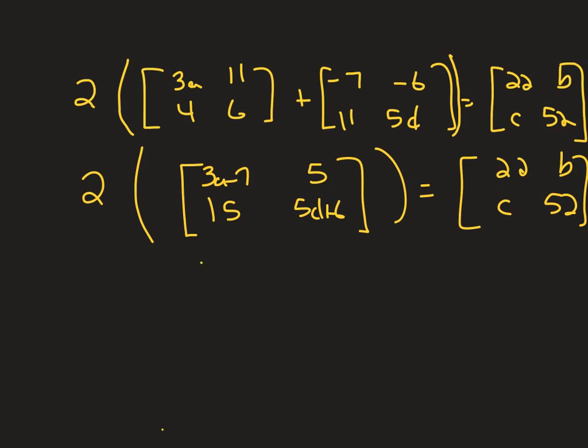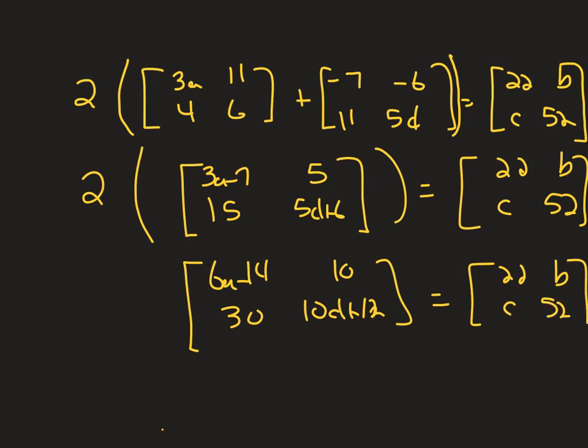Now I still got some stuff I can do on the left. I have a scalar on the left side, which is a 2, so I'm going to multiply everything in there by 2. 6a minus 14, 10, 30, 10d plus 12. That's a 12, by the way. Equals 22b, c, and 52.